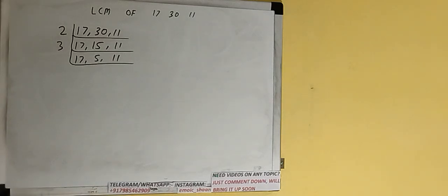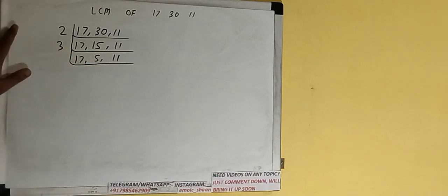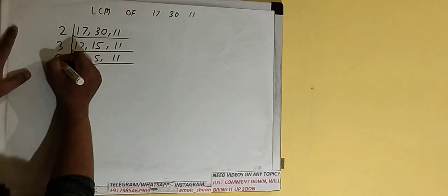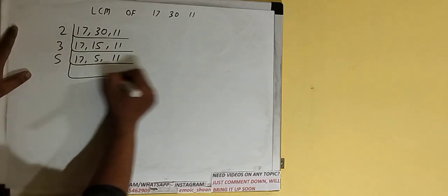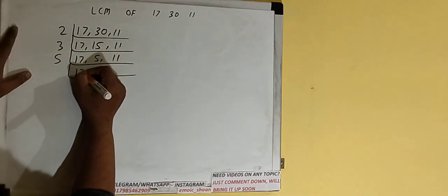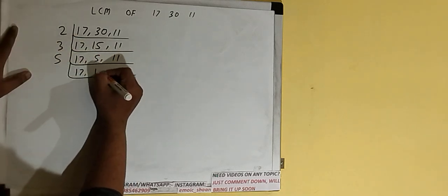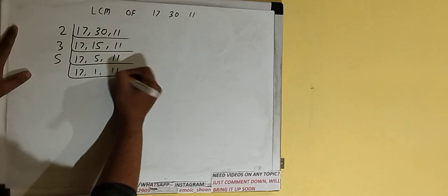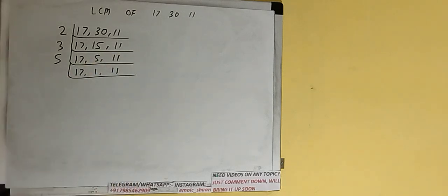Now if we check, none of the numbers are divisible by 3 either, so we check with the next lowest prime number, which is 5. The second number is divisible by 5, so we divide and we'll have 17, 1, 11.